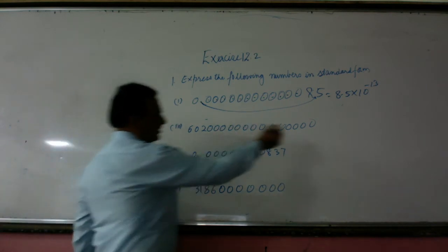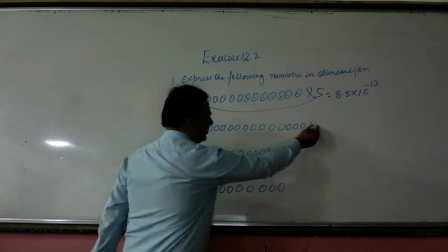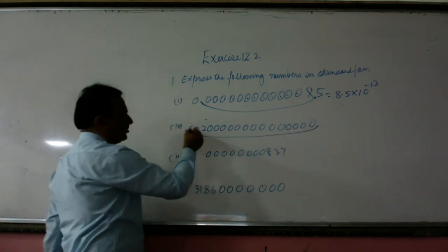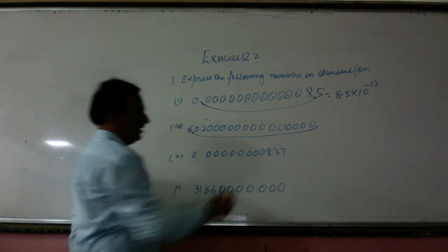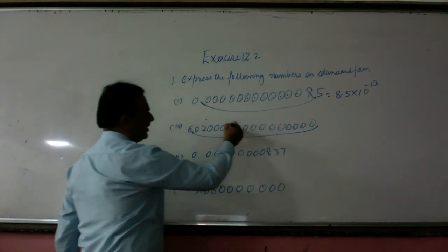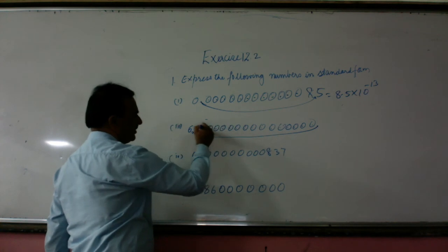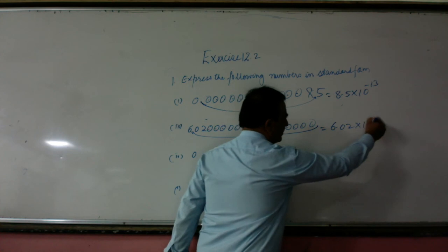Now here this decimal is here, so it has to be shifted here. So it is a very big number, so we will use positive exponents. 1, 2, 3, 4, 5, 6, 7, 8, 9, 10, 11, 12, 13, 14, 15, 16. So it will be 6.02 × 10^16.